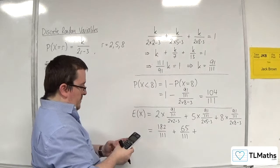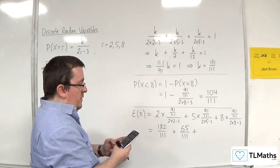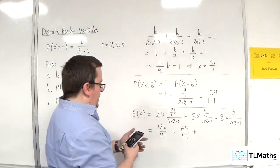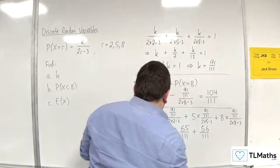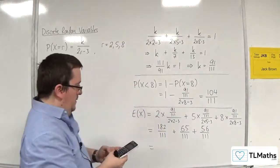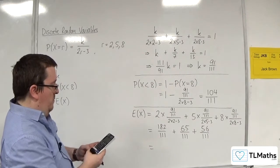And then 8 times 91 over 111, divided by 13, which is 56 over 111. So 182 plus 65 plus 56 divided by 111.